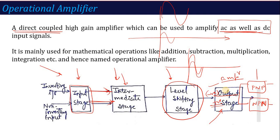This is the overall introduction about the four stages: the input stage, intermediate stage, and output stage are amplifiers, but the output stage is specifically a push-pull amplifier. The role of the level shifting stage is that due to direct coupling, gain becomes very high, and the signal shifts from its zero DC level. To shift the signal back to the zero level, that is the main purpose of this level shifting stage.